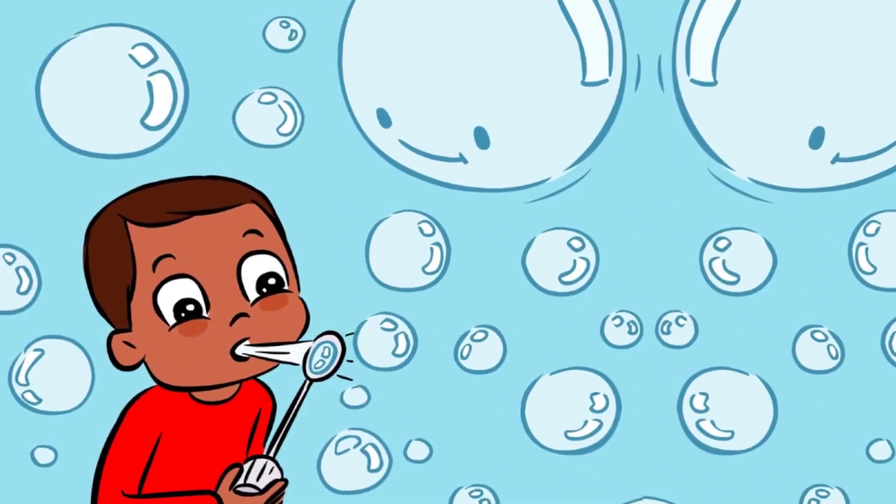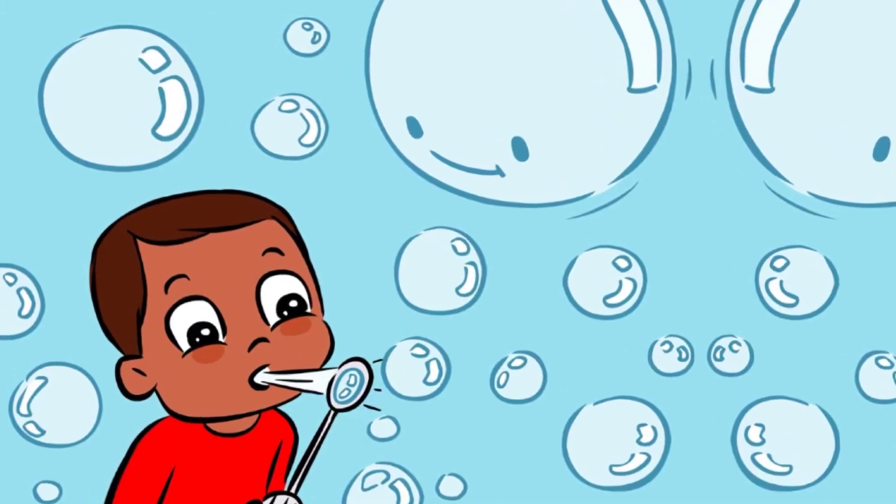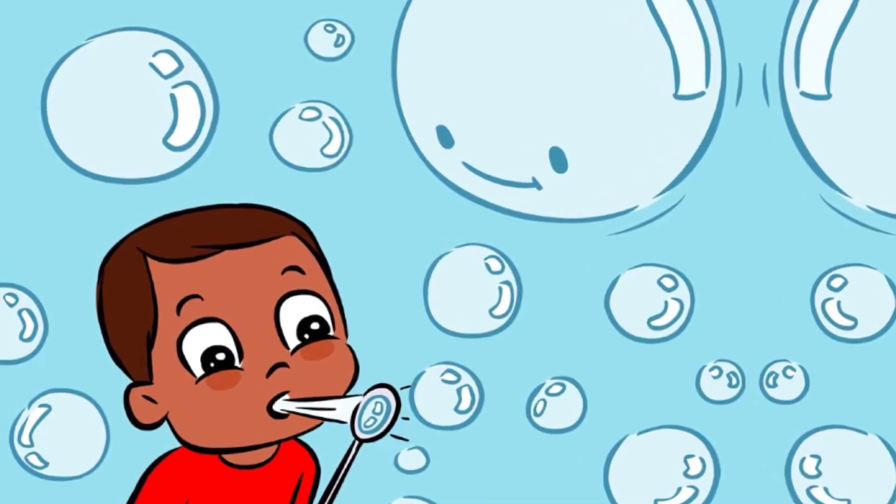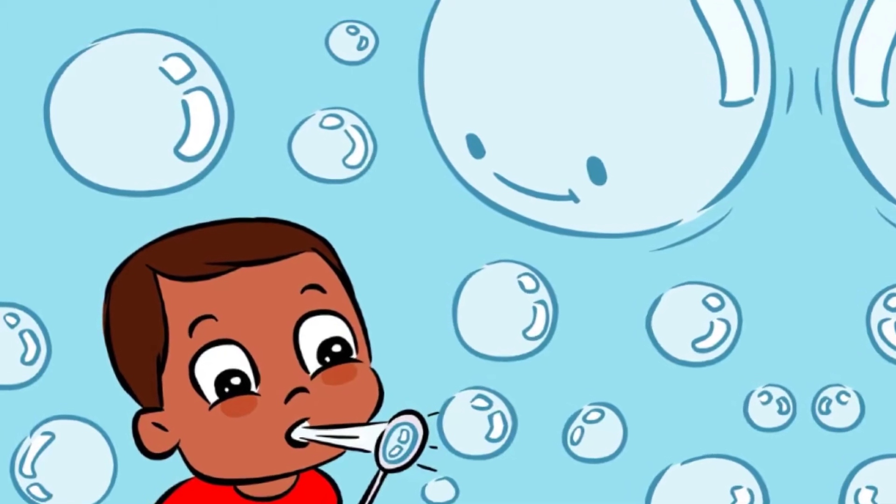But there was one bubble, just one, that would not burst. It was not high in the sky. It was not moving very fast. That bubble just floated there, looking back at Nico.